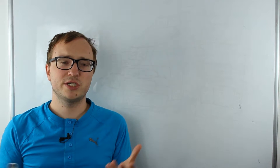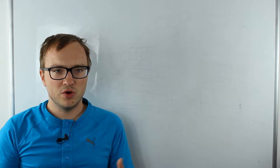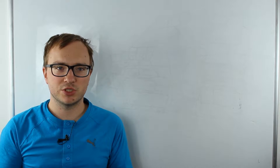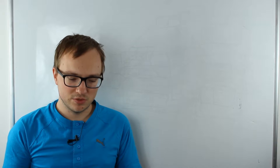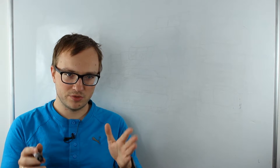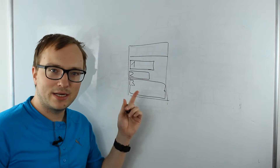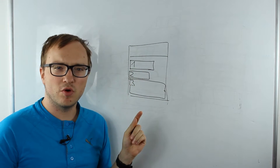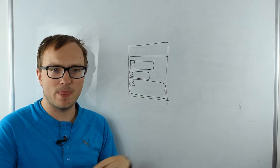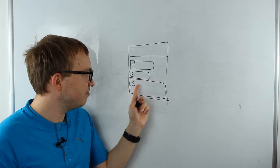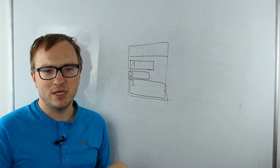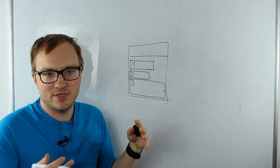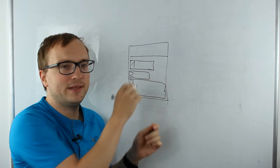Clustered indexes and heap tables behave very differently, so we start with this video just about updates in heap tables. Let's assume the situation: we have a heap table with only the IAM page chain as the organizational structure, which we covered in previous videos. Imagine a data page in a heap table — an ordinary page with a header and some rows: row one, row two, and row three. The page is already full. If we update in-place, nothing happens — we just change the data there and that's it.